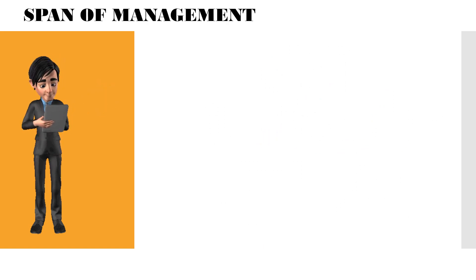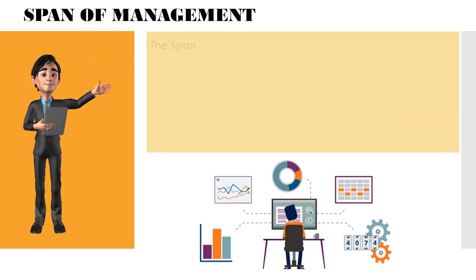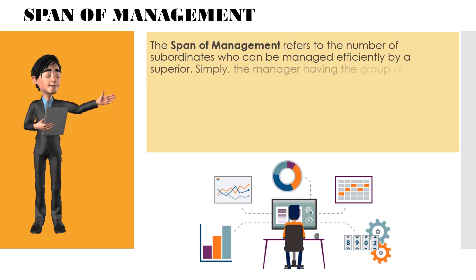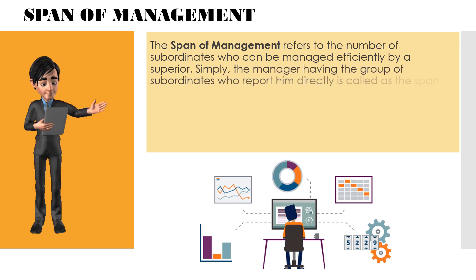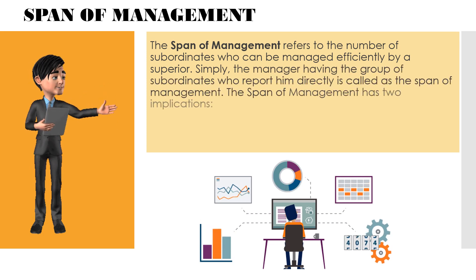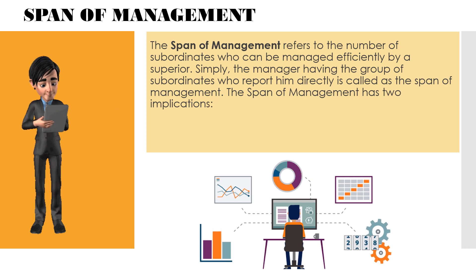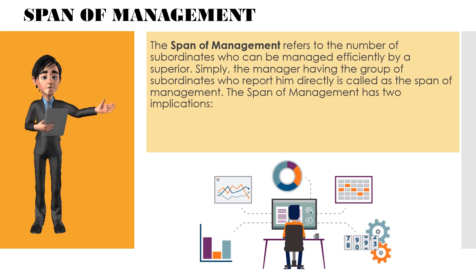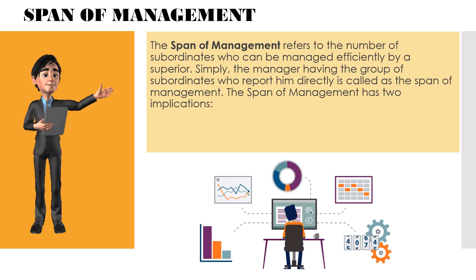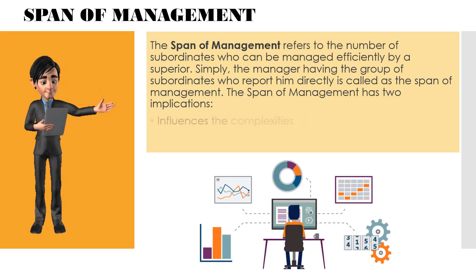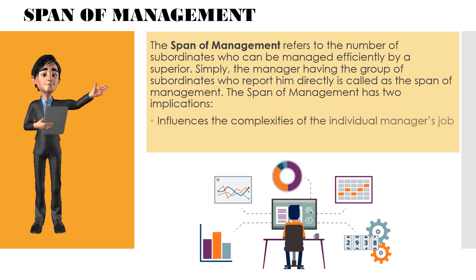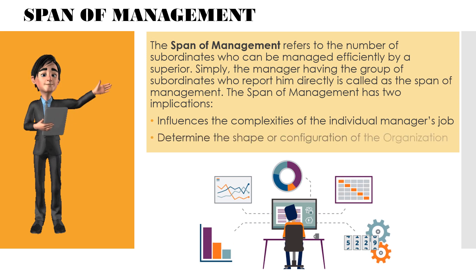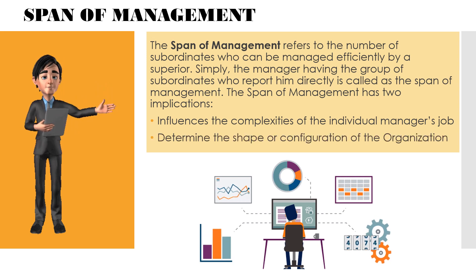Span of management. The span of management refers to the number of subordinates who can be managed efficiently by a superior. Simply, the manager having a group of subordinates who report to him directly is called the span of management. The span of management has two implications: it influences the complexities of the individual manager's job, and it determines the shape or configuration of the organization.